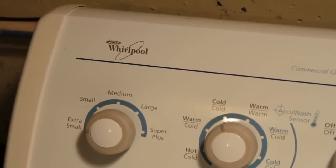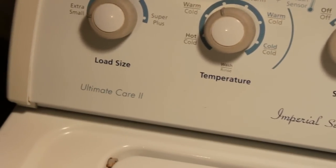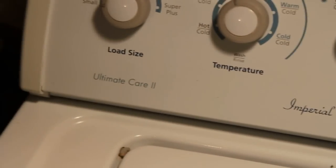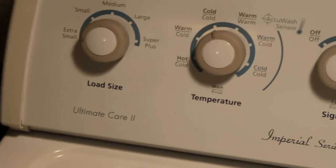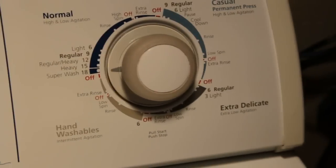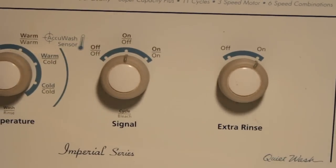Well today I'm going to fix the agitator in our Whirlpool washing machine. This one's an Ultimate Care Imperial Series, I think it's Ultimate Care 2. And I suspect there's other models out there that are pretty similar to this. I'll open this up and take a look at it.